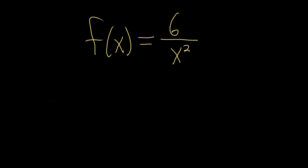Hi everyone. In this problem we're going to find the vertical asymptotes. This is a rational function, and whenever you have a rational function, the steps to finding the vertical asymptotes are as follows.